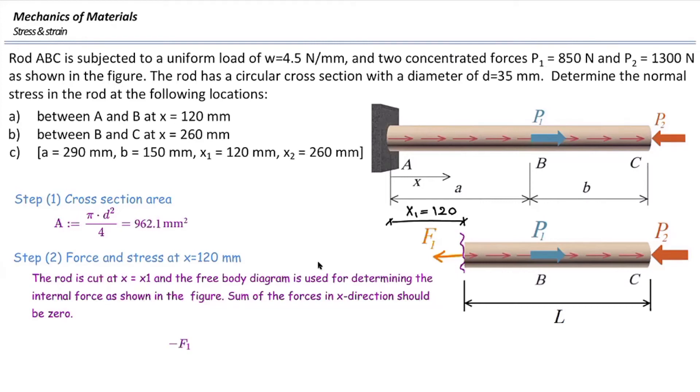For this problem, starting from the left side, F1 goes to the left, so I assume that is negative. Plus P1, because P1 goes to the right side. P2 would be negative. Also, we have the distributed load. How can I calculate the resultant of the distributed load?